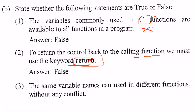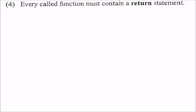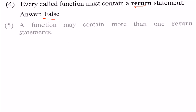The same variable names can be used in different functions without any conflict — this is absolutely correct. Because when you have different functions, the scope is different, and even if you name variables the same, they do not conflict. Every called function must contain a return statement — no. If you want a function just to print some value, why would you need a return? So this is false.